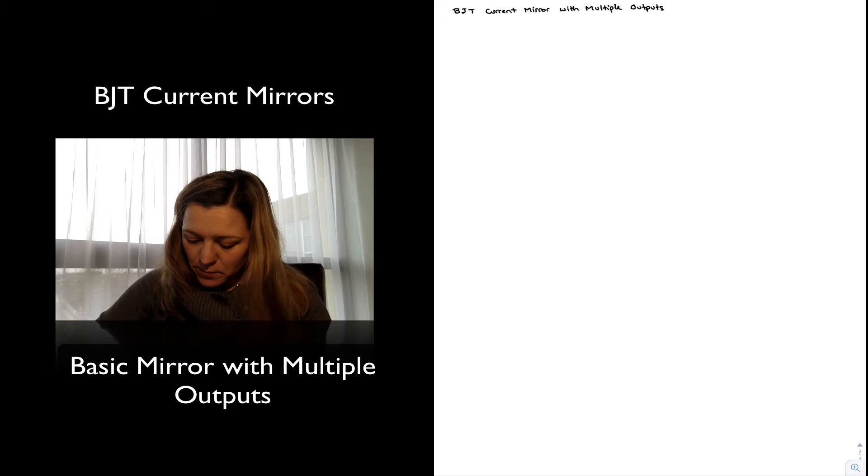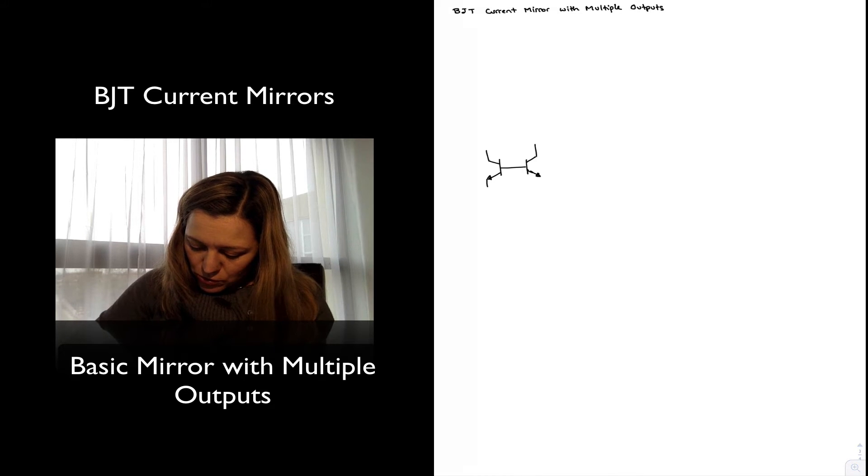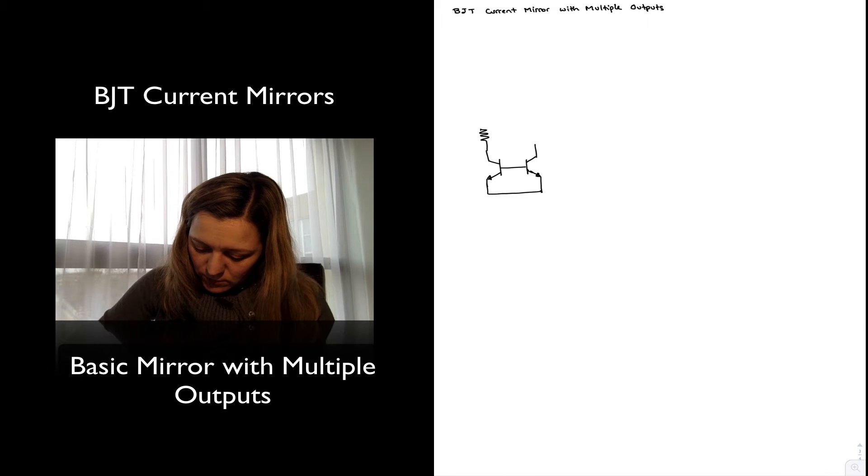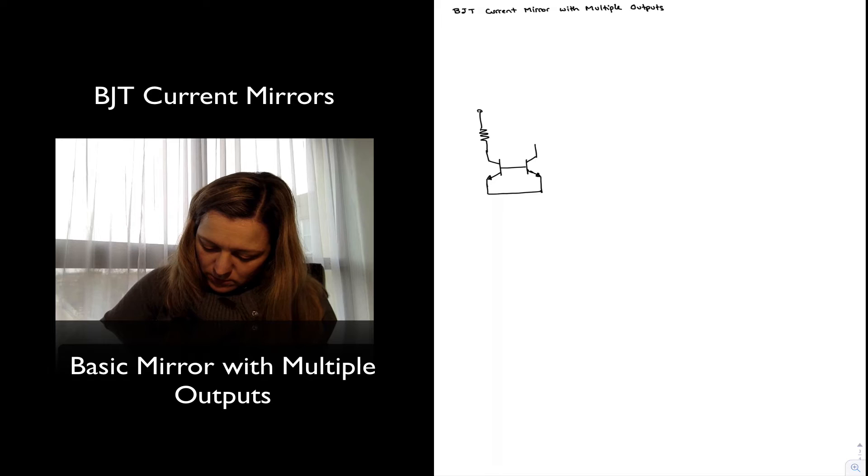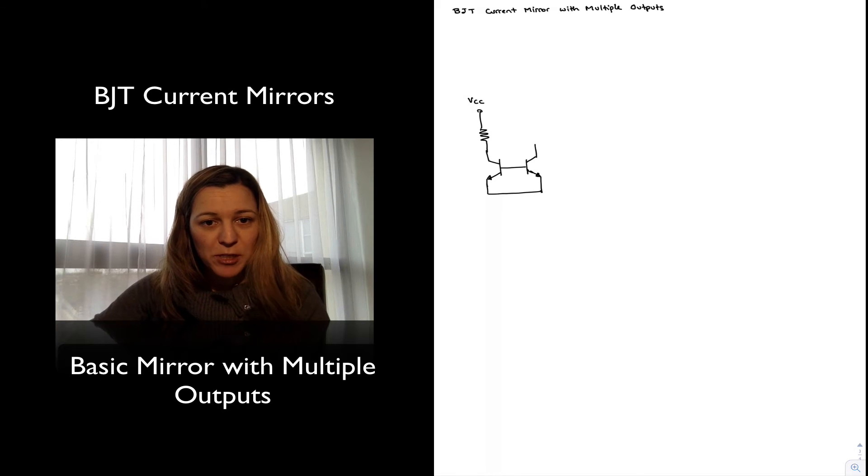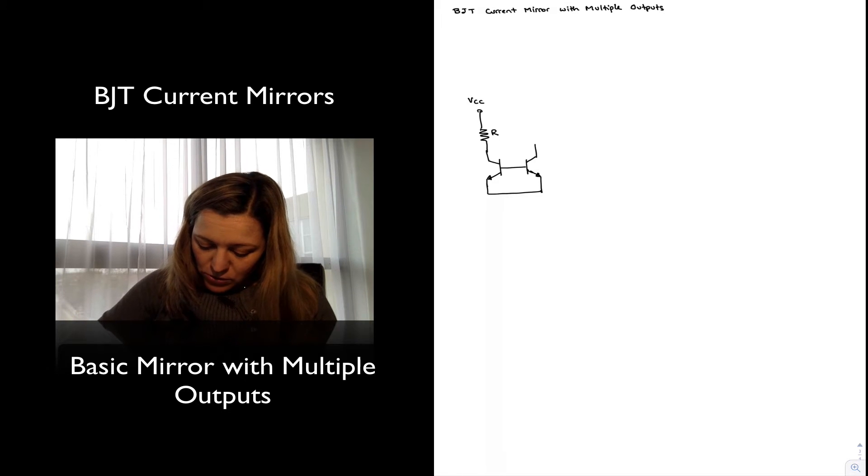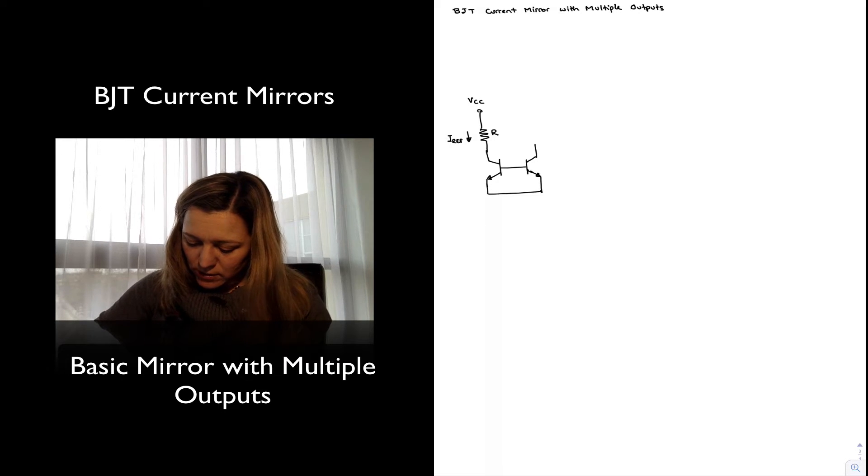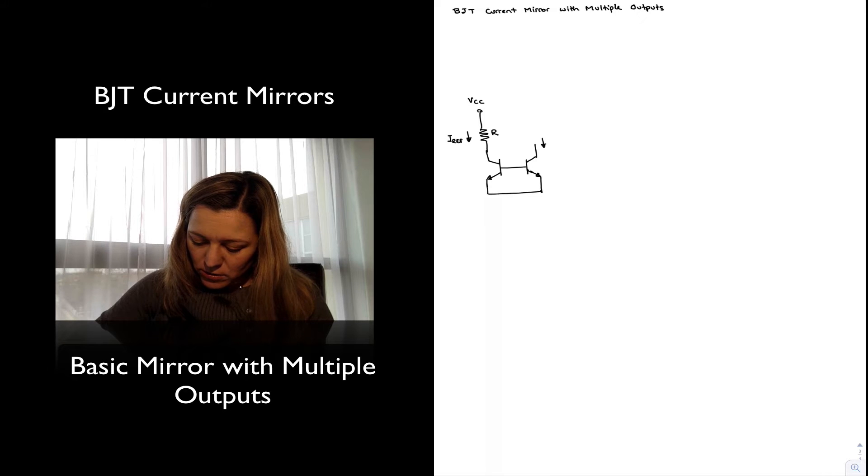And the idea again is that a basic BJT current mirror can be expanded to produce multiple outputs. So I'm going to draw my basic mirror, and I'm intentionally leaving some blank space up there, but let's start with a simple case. This will be my basic current mirror. I have my R resistor here, I have my reference current IREF, and with this I'm producing some output current Iout.